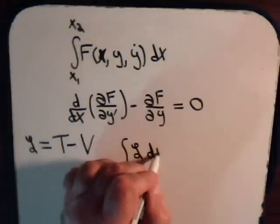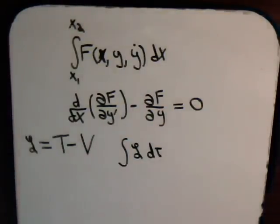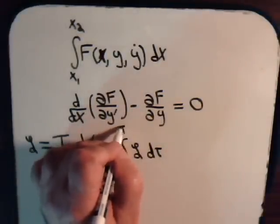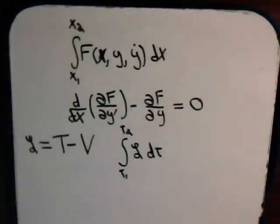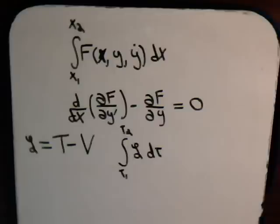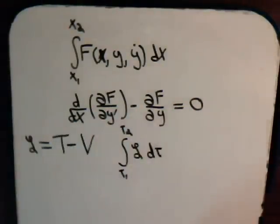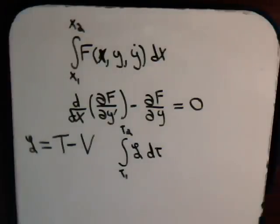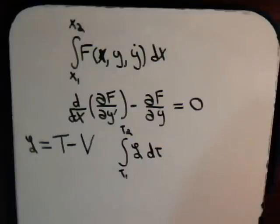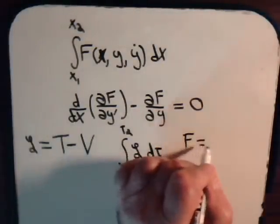What is interesting about this function is that for the motion of a particle or system of particles, if we take an integral of the Lagrangian over a period of time, the Lagrangian of the system is a stationary integral. From this we get a corresponding Euler-Lagrange differential equation that will govern the motion of the system. For many systems, this approach is actually simpler than applying Newtonian mechanics.